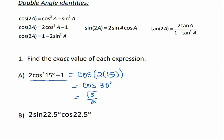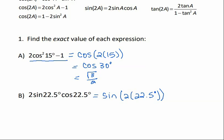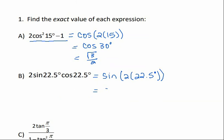For the next example, it's 2 sine of 22.5 degrees times cosine of 22.5 degrees. If we look at our double angle identities, that matches the sine double angle identity: sine of 2a is equal to 2 sine of a cosine of a. So our a is 22.5 degrees. This equals the sine of 2 times 22.5, which is the sine of 45 degrees. The sine of 45 degrees is the square root of 2 over 2.